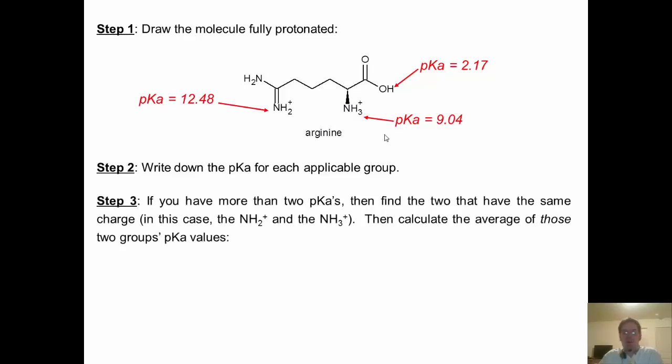Step 3, if you have more than two pKa's, and we do in this case, then find the two that have the same charge. I'm going to pause here for a minute and look at that. I have an OH, no charge. I've got an H2 plus and an H3 plus. They both have a plus one charge. These are the two groups that have the same charge. Then I calculate the average of those two groups' pKa values, which is this. 9.04 plus 12.48 divided by 2 is 10.76.